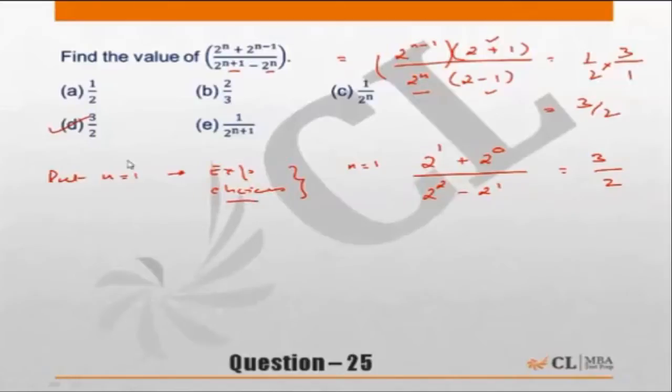Now put n equal to 1 in the choices. If we put n equal to 1 in the choices, what do you get? Choice a is 1 by 2, which is incorrect because the value for n equal to 1 has to be 3 by 2. Choice b again is incorrect. Choice c, put n equal to 1, this becomes 1 by 2, hence incorrect.